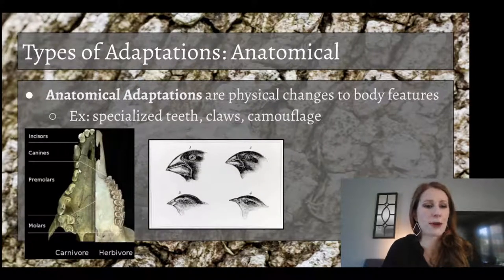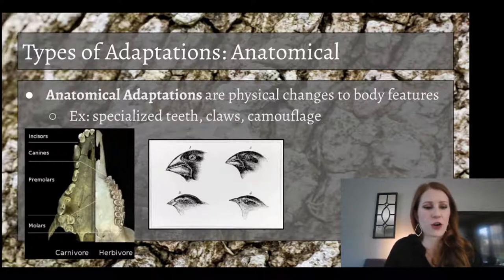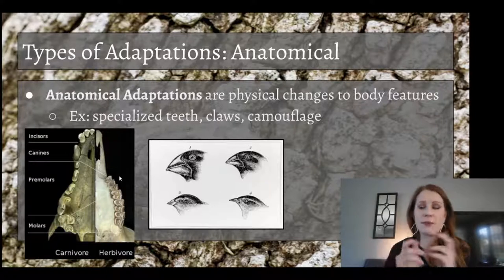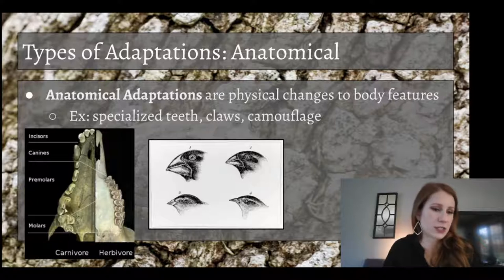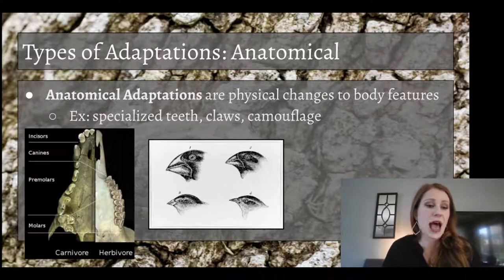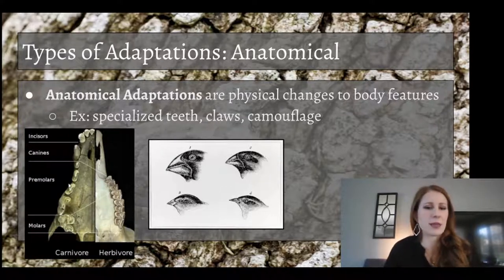Here we have a picture of some horse teeth and a carnivore. The horse has flat molars — pretty flat — so it doesn't need to be ripping and tearing into its meal; it just grinds the plant matter down. Over here in our canine, which looks like a wolf, we've got incisors for ripping into meat, canines to hold it in place, and some molars at the back of the mouth. Mostly they're specialized to eat meat.